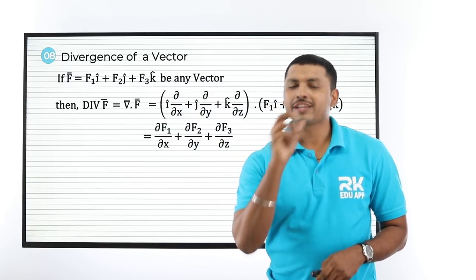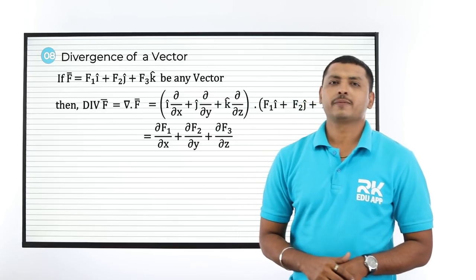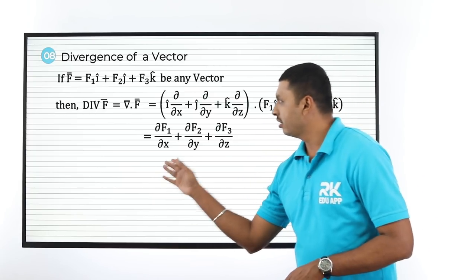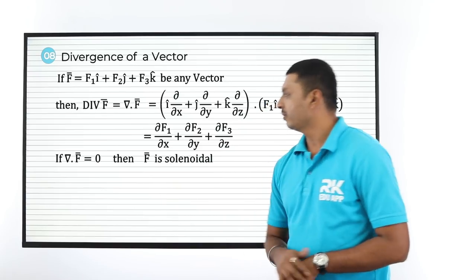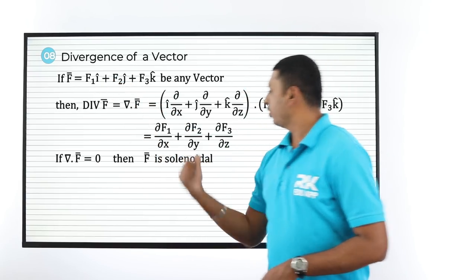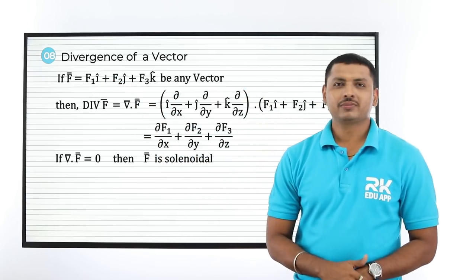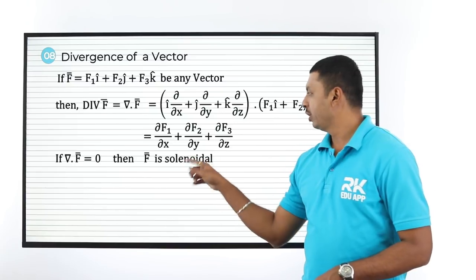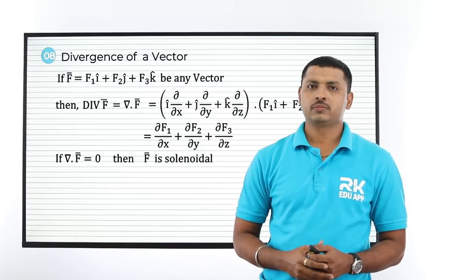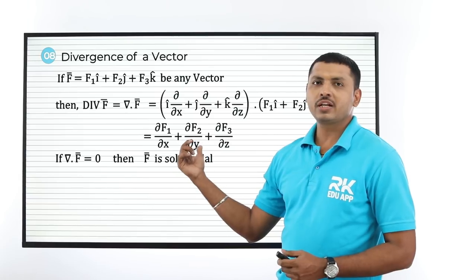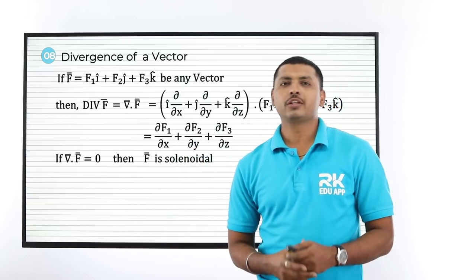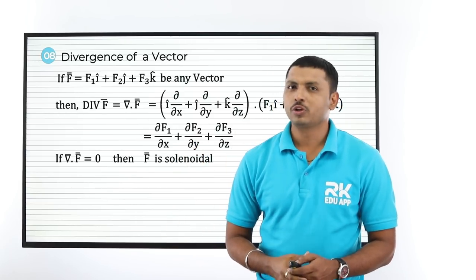There is an extended part: if del · F̄ = 0, then such a vector is called solenoidal. So remember the divergence formula — if the answer is 0, that type of vector is called solenoidal.